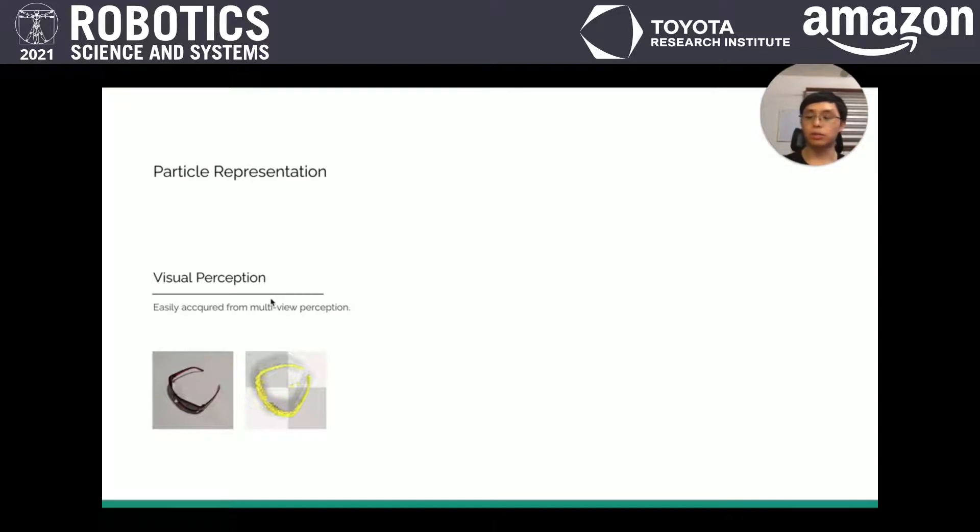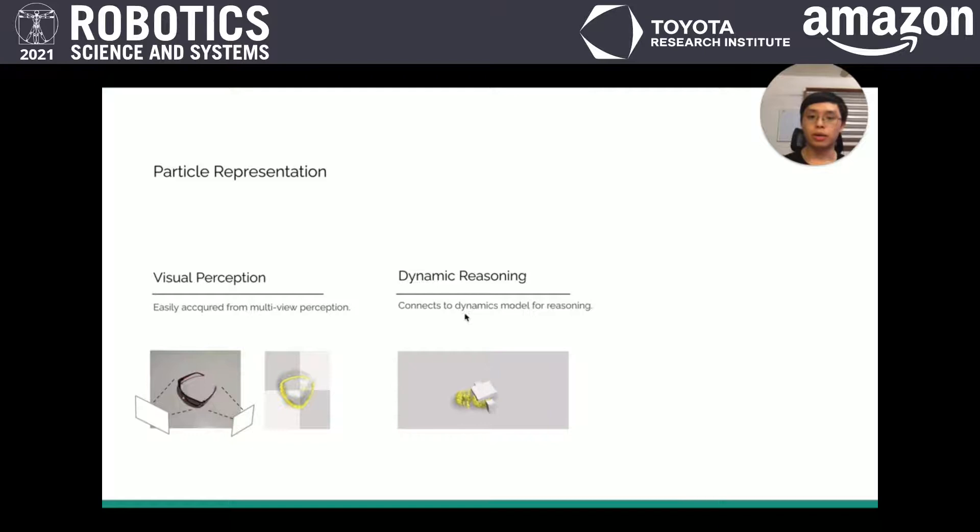It has several meanings. First, it connects to visual perception. We can easily acquire the particle representation from multi-view visual perceptions. Second, it connects to dynamic reasoning. We can connect to a particle-based dynamics model to reason about the physics.